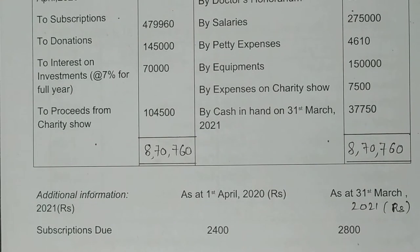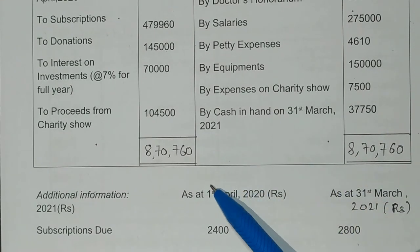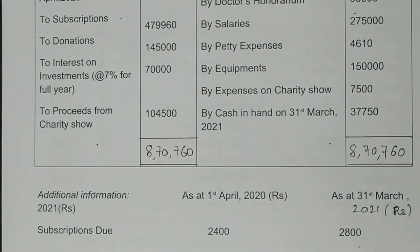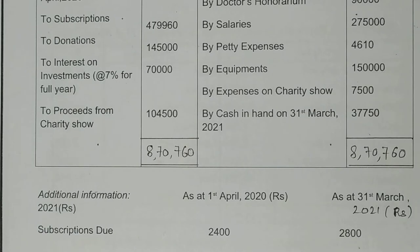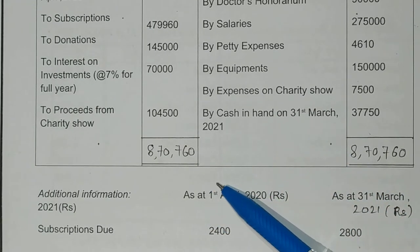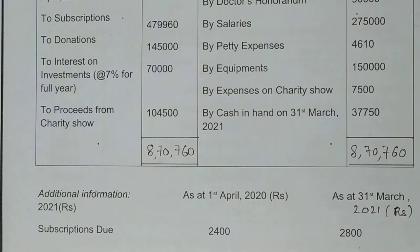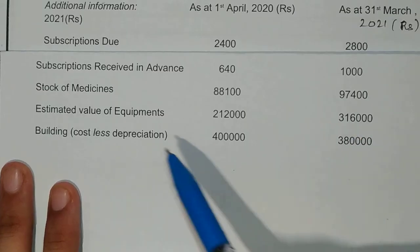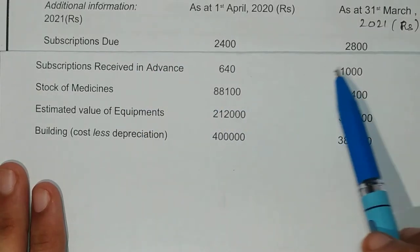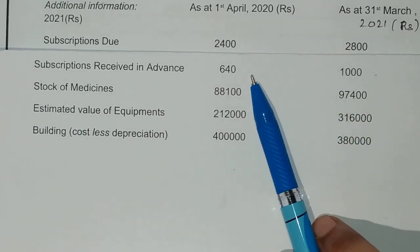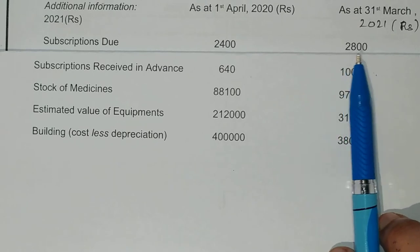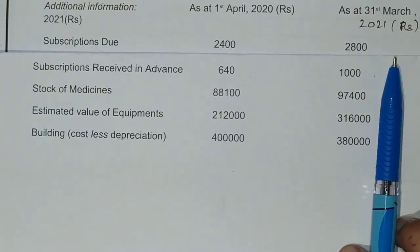After this, the additional information tells us: as of 1st April 2020 and 31st March 2021, the related amounts are given. Outstanding subscription — opening and closing — will be added. The subscription amount for current year will be added, and the subscription for next year which has been received in advance will be less. So in the working note for subscription, the closing outstanding is added and the opening outstanding is deducted.